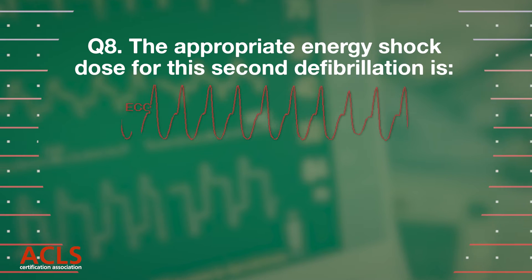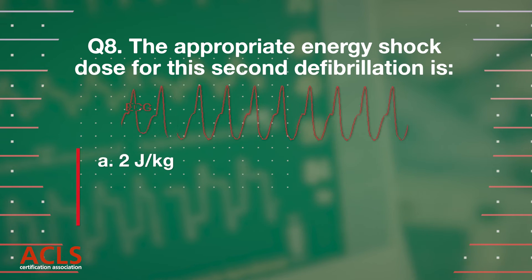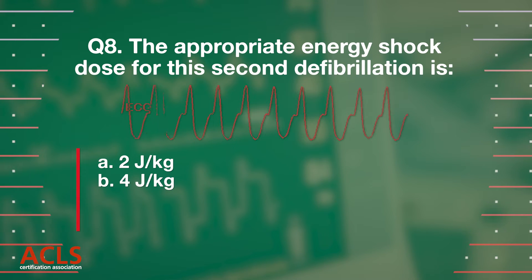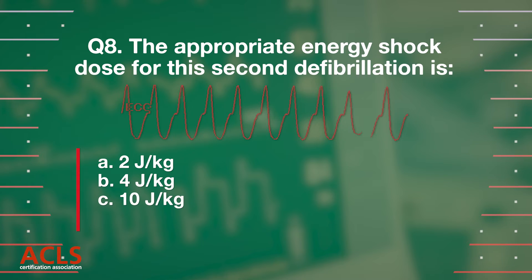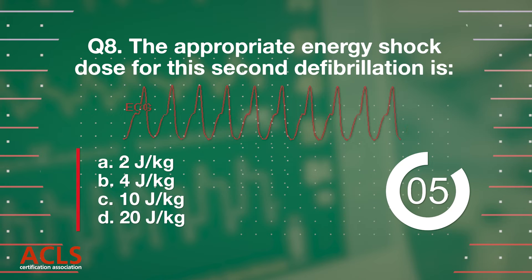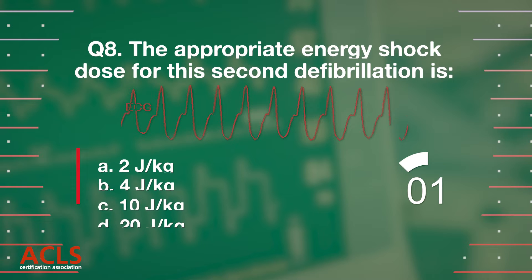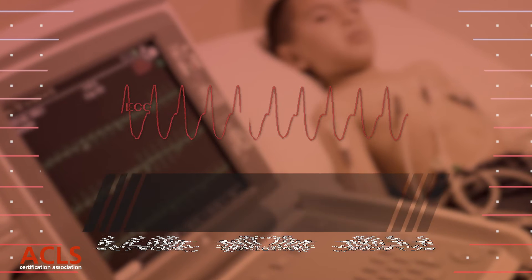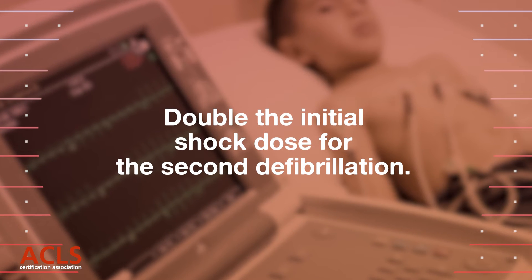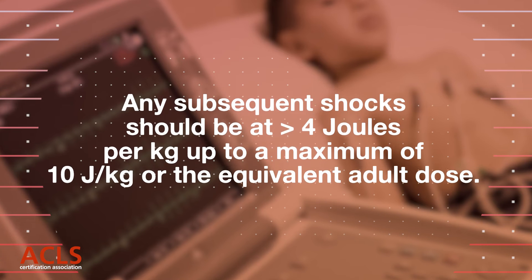Question 8: The appropriate shock energy dose for this second defibrillation is: A) 2 joules per kilogram, B) 4 joules per kilogram, C) 10 joules per kilogram, D) 20 joules per kilogram. Correct answer: B) 4 joules per kilogram — double the initial shock dose for the second defibrillation.